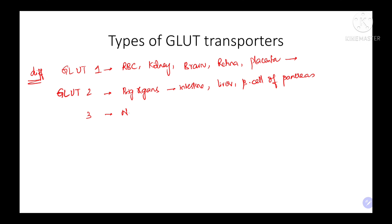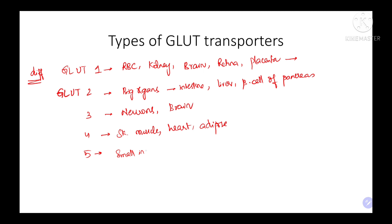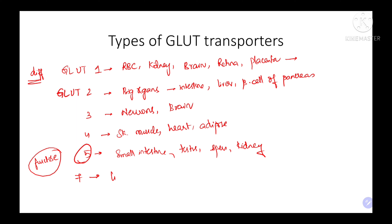GLUT3 is located on neurons and the brain. GLUT4 is located in skeletal muscle, heart, and adipose tissue. GLUT5 is mainly located on the small intestine, testes, sperms, and kidney, and is mainly required for the absorption of fructose. GLUT7 is located in the liver endoplasmic reticulum.